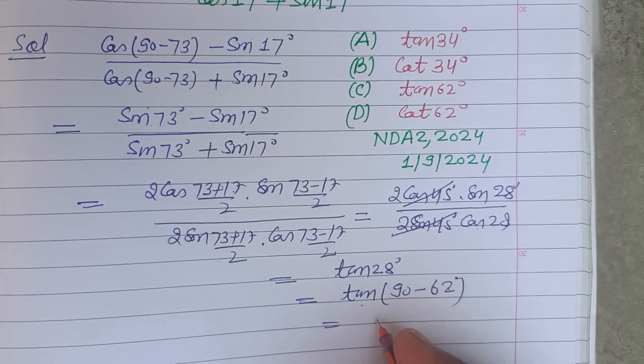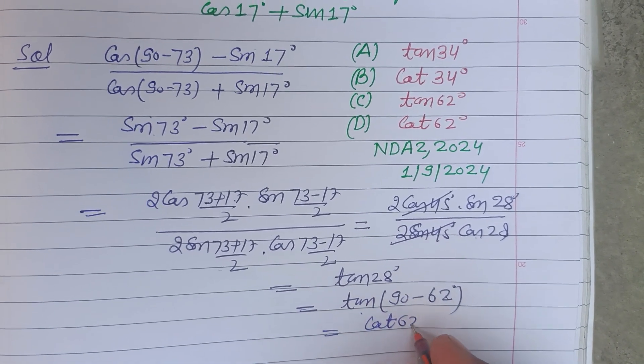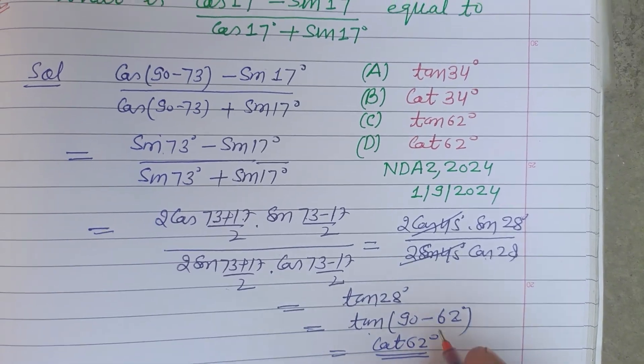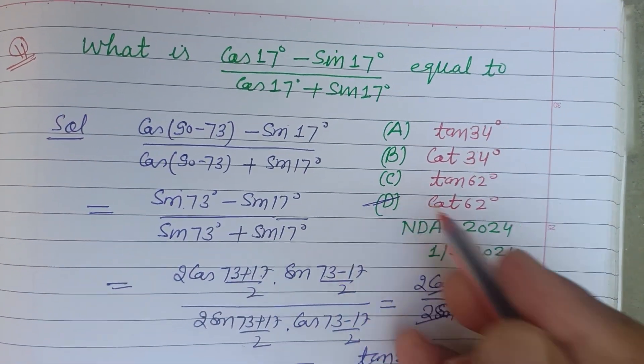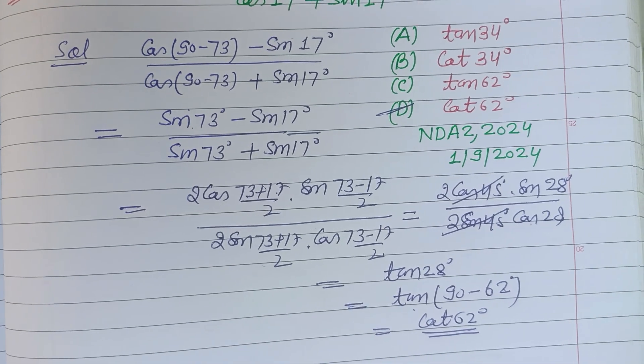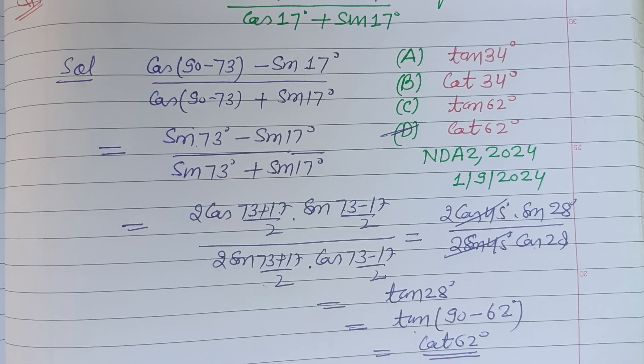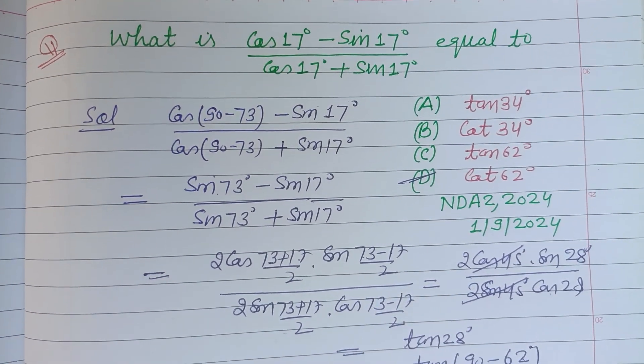This is cot θ, cot 62°. So cot 62° is the answer which is found in option D. So option D is correct. I hope you got it, please like the video, subscribe the channel, thanks for watching.